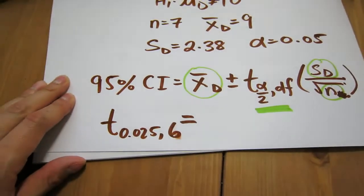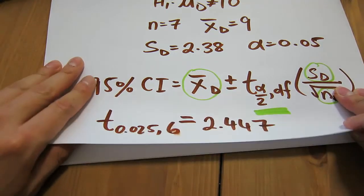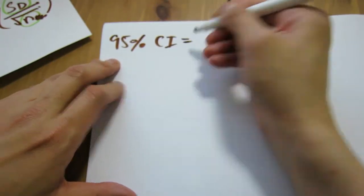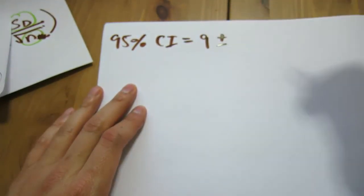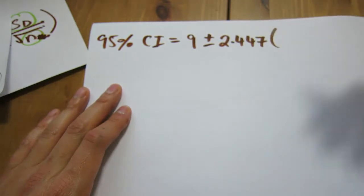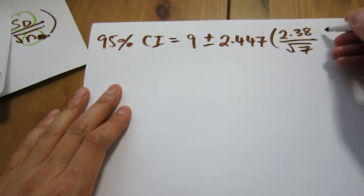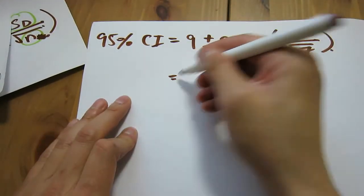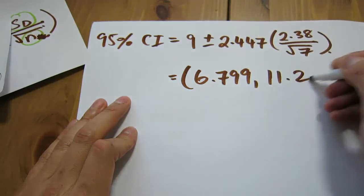Now we know the t-critical value is 2.447, so we can substitute into the formula. The 95% confidence interval equals our sample mean for the difference, 9, plus or minus 2.447 times our standard error, which is 2.38 divided by the square root of 7. This gives two numbers: the smaller number is 6.799 and the bigger number is 11.201.